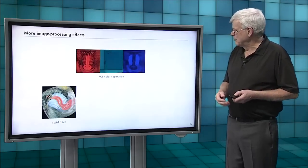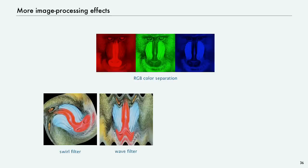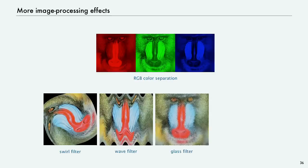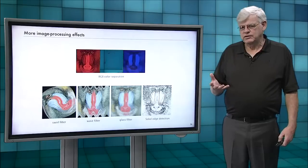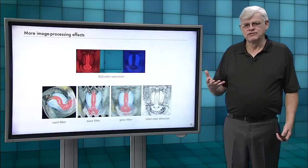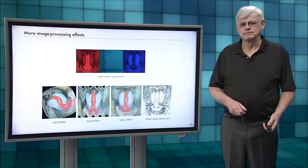So you can separate out the RGB colors. That's a thing called a swirl filter. That's a wave filter. Glass filter. All these types of transformations are actually not so difficult computationally. So all kinds of effects like this and you can see how to do them on your own pictures in the book site or in the book.